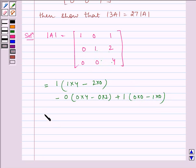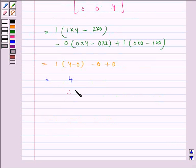So we get, which is equal to 1 times 4 minus 0 minus 0 plus 0, which is nothing but 4. Therefore, determinant of A is equal to 4.